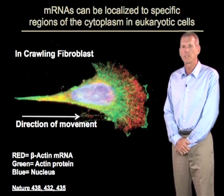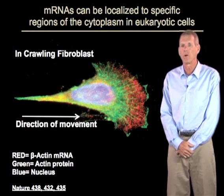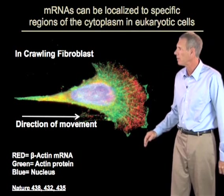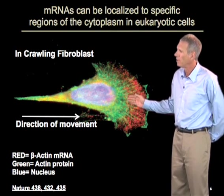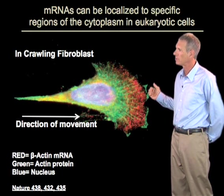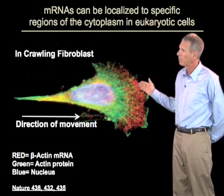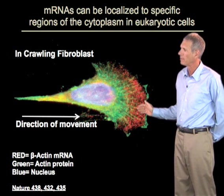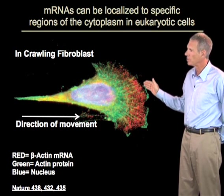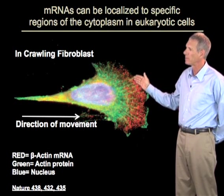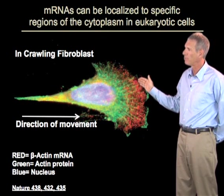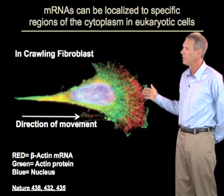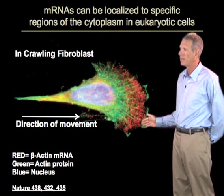Once in the cytoplasm, mRNAs can be localized to specific regions. For example, this is an image of a crawling fibroblast, crawling towards the viewer across the screen. Within the fibroblast, the red structure is actually the beta-actin mRNA, and you can see it's localized to the leading edge of the fibroblast cell. That's because actin filaments are assembling at those sites, and so the cell needs newly synthesized actin preferentially in that region.